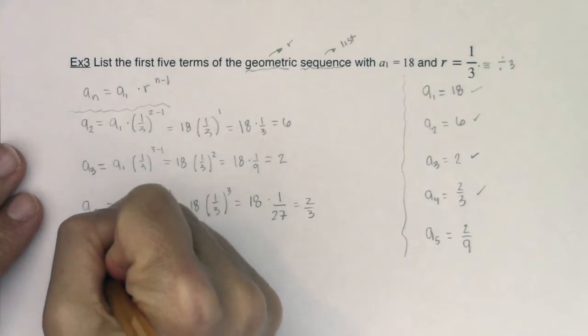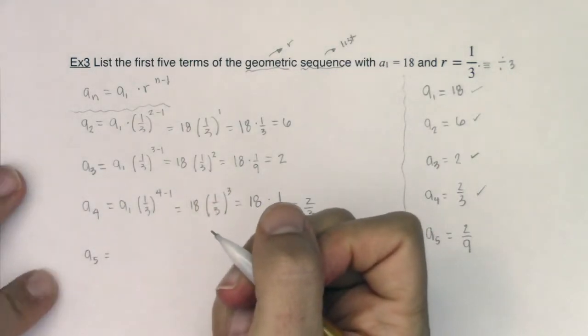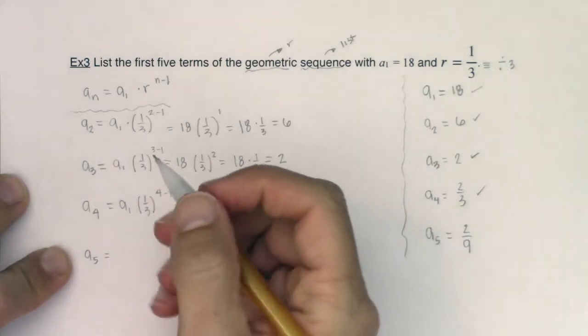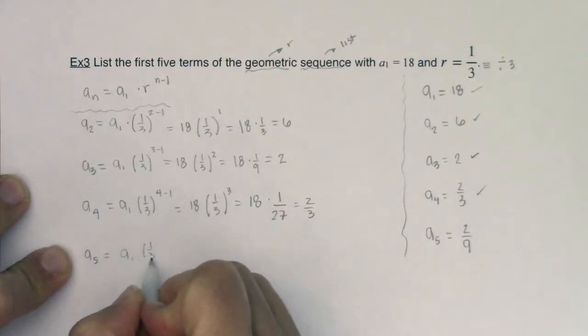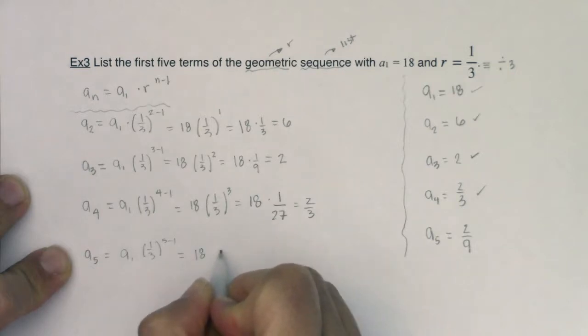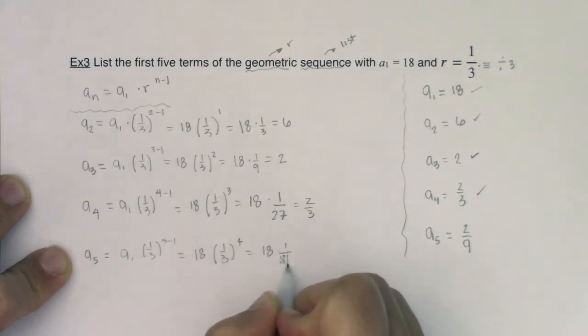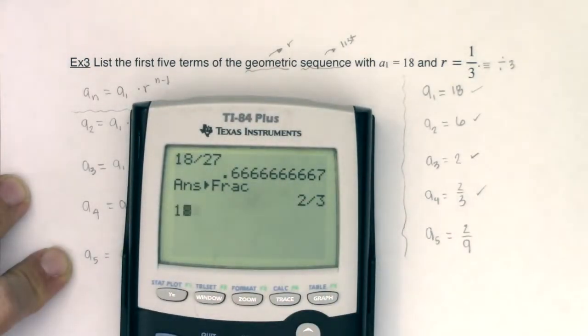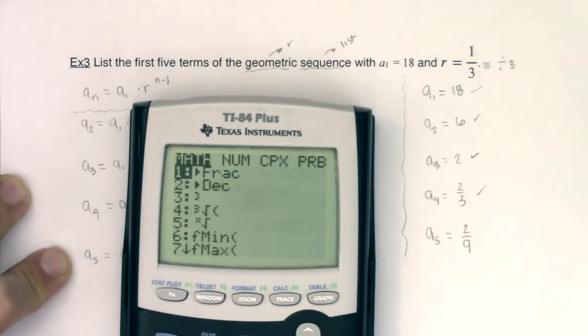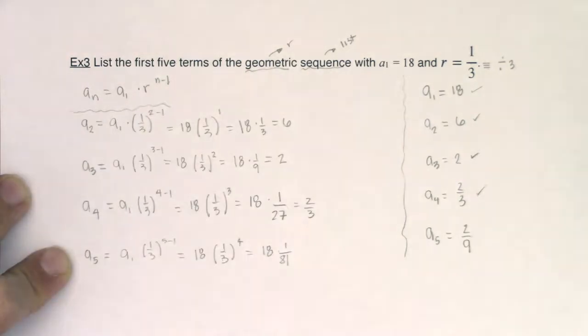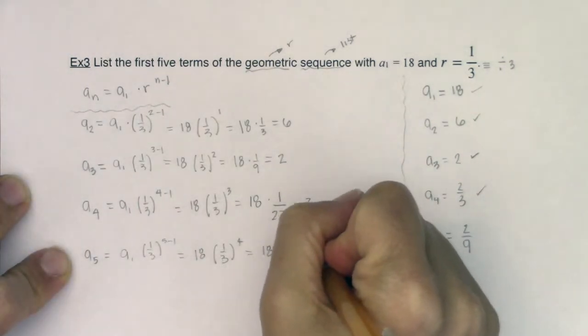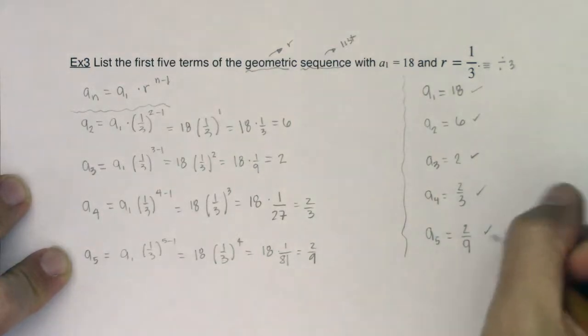Let's try a sub 5. Alright, so if I'm going to go with a sub 5 here. We're going to go a sub 1 times 1/3. Now n is 5 to the 5 minus 1. That is 18 times 1/3 to the 4th which would be 18 times, alright, 1 to the 4th is 1, 3 to the 4th is 81. Let's see what 18 divided by 81 is. Sure enough it is 2/9. Alright, so this checks out as well.